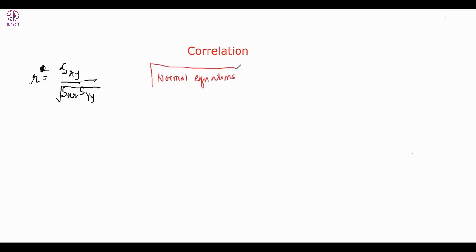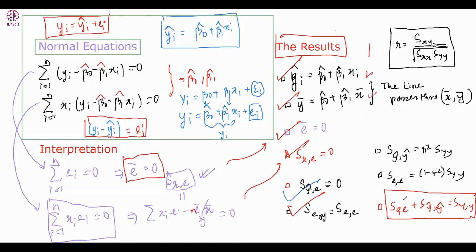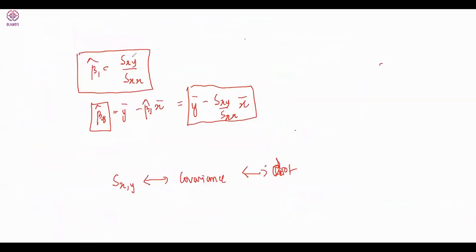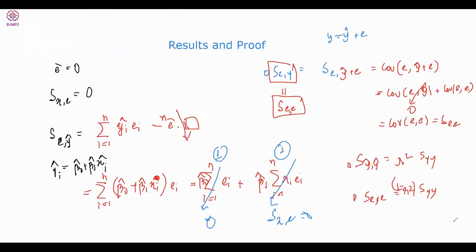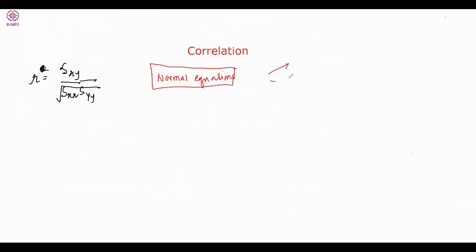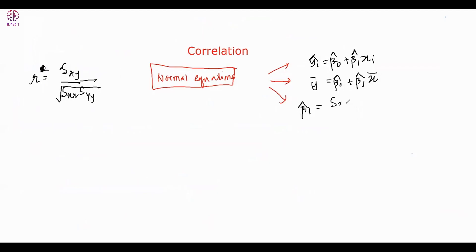Going back to the normal equations, we got the following results. We have three key equations: ŷᵢ = β̂₀ + β̂₁xᵢ, and ȳ = β̂₀ + β̂₁x̄. We also derived that β̂₁ = SXY / SXX.